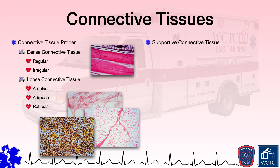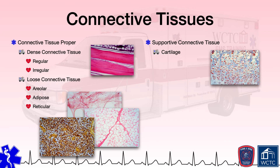Supportive connective tissue essentially provides structure and strength to the body while also protecting soft tissues. Such supportive connective tissue is found in the form of cartilage and bone. Cartilage is tough but flexible tissue that exists in joints, the end of the ribs, between vertebrae in the spine, in the ears and nose, and within bronchial tubes and airways. The purpose is to protect the body from the forces of compression and tension. Cartilage is harder than dense connective tissue but softer than bone. Cartilage also lacks nerve fibers, and as with dense connective tissue, it has a limited blood supply and takes time to heal if damaged.